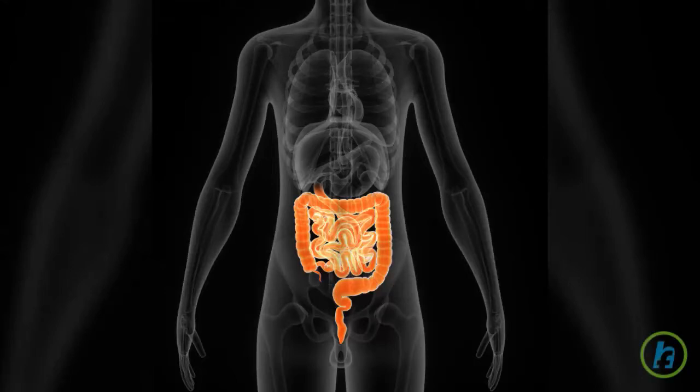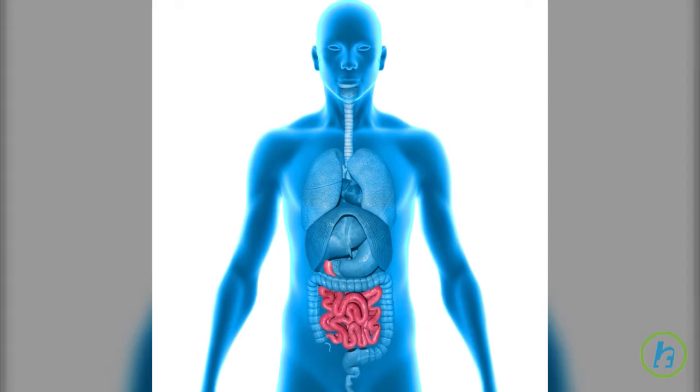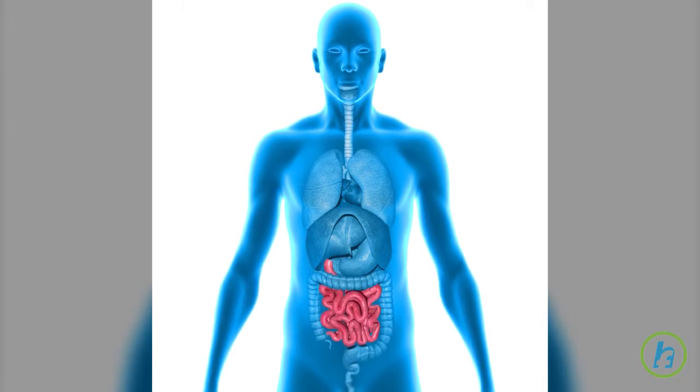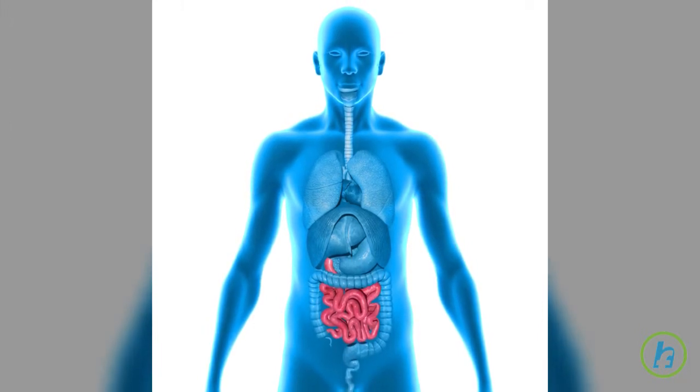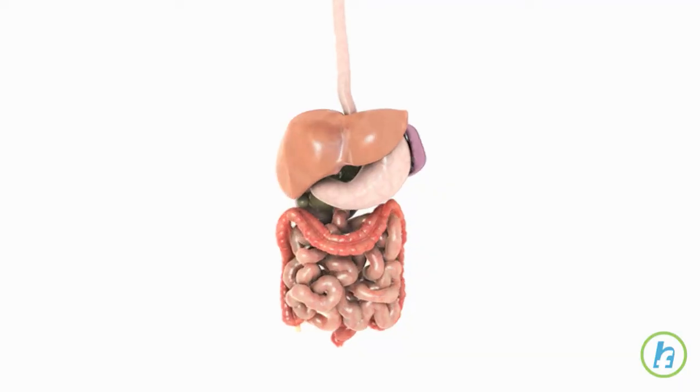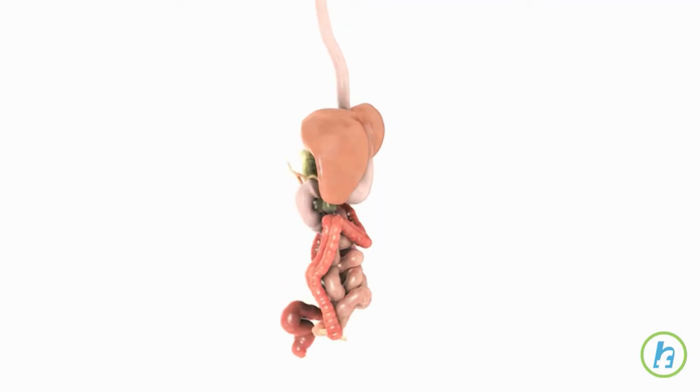The gastrointestinal, or GI tract, includes the mouth, esophagus, stomach, small intestine, and large intestine. It is here in the GI tract where digestion of food takes place.